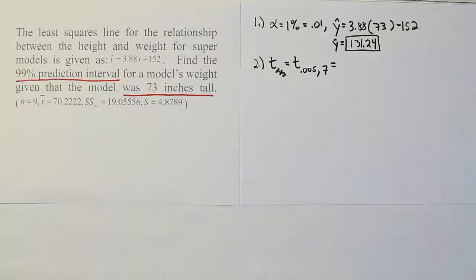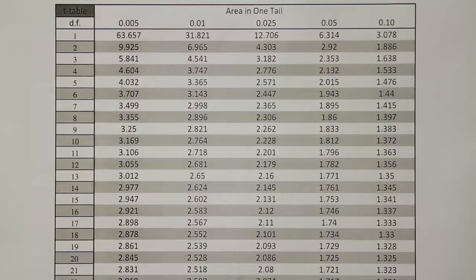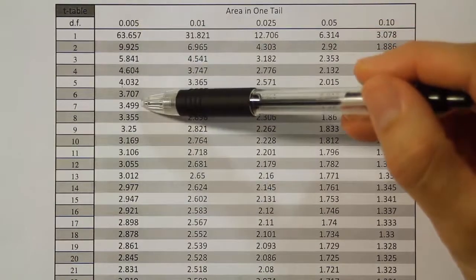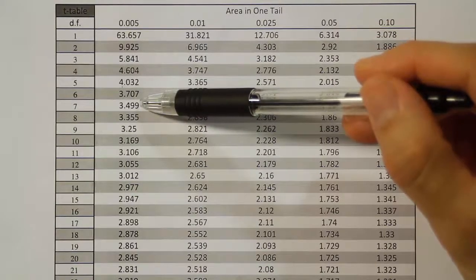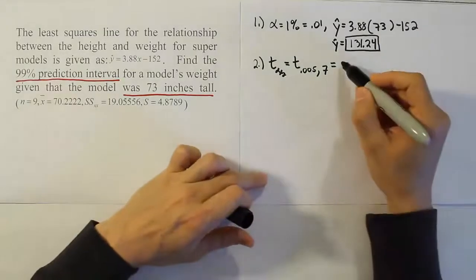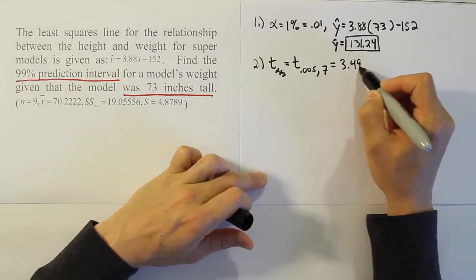We're looking for the value 0.005 with 7 degrees of freedom. We get the answer 3.499. So we found our critical value to be 3.499.